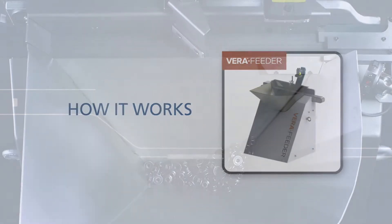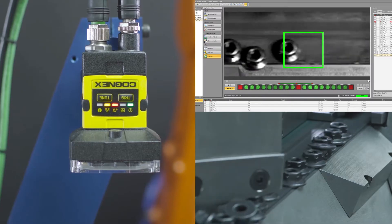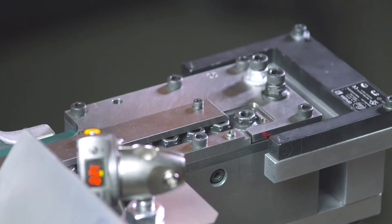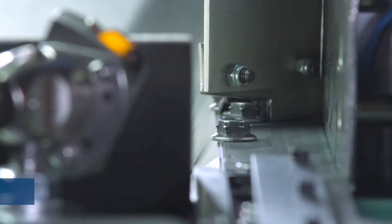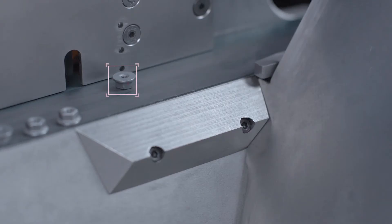Here's how it works. The Vera Feeder delivers a part to the conveyor from the hopper for alignment, visual inspection, and selection, which all occur in a fraction of a second, resulting in faster throughput than previous solutions. Misaligned and incorrect parts are automatically returned to the hopper.